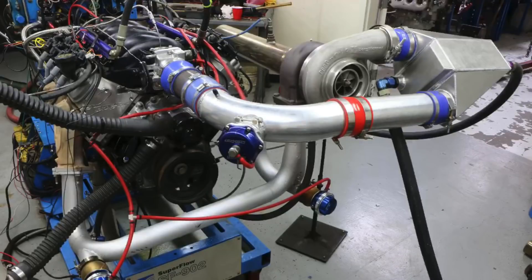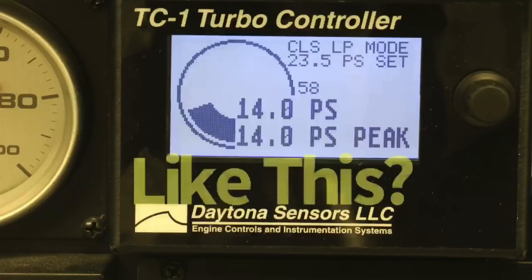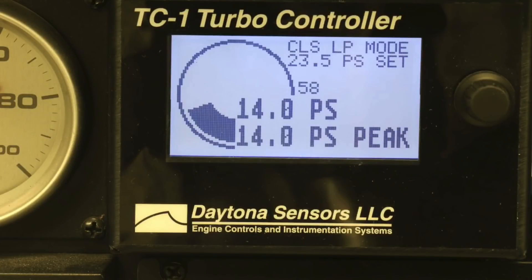Our next test, big 671 blower, two carburetors, instant boost. Whether you're going to cars and coffee or to the drag strip, you're definitely going to get noticed with something like that. Now turbos LS, obviously a match made in heaven, that always works well.